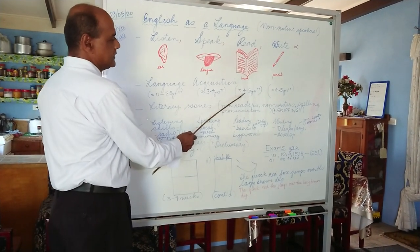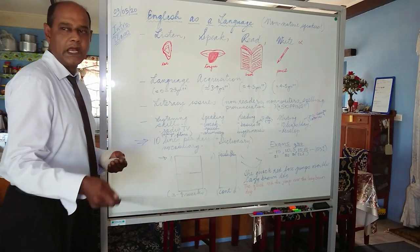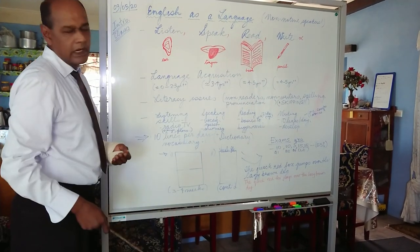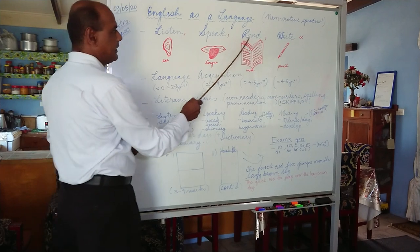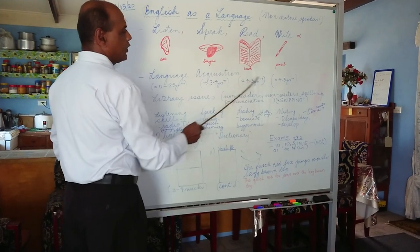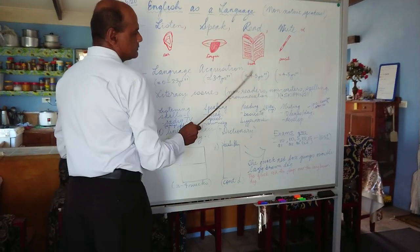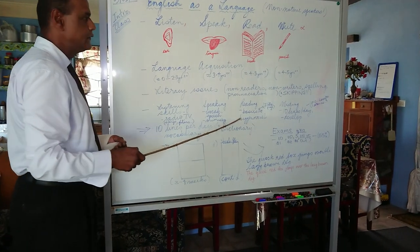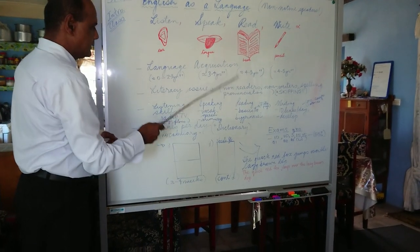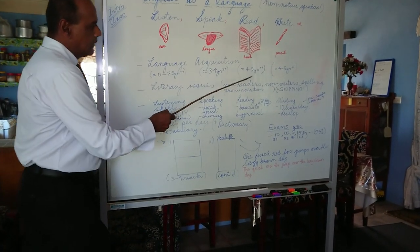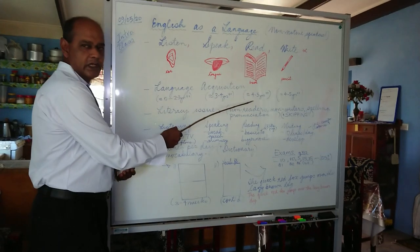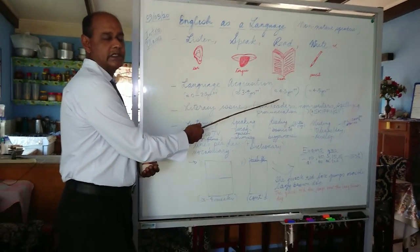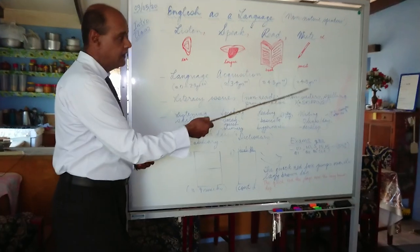Listening and speaking go together — listening develops first, then we learn how to speak. By the ages of four and five years we start learning how to read and then write at the same time. Reading and writing come normally at the same stage, and for that we start off with the code of the English language — the English alphabet: A, B, C, D...